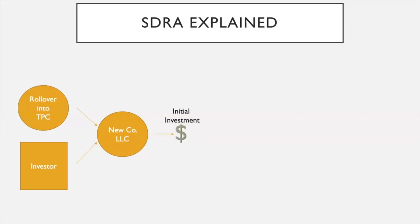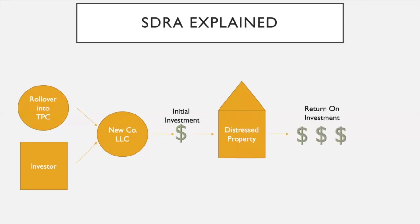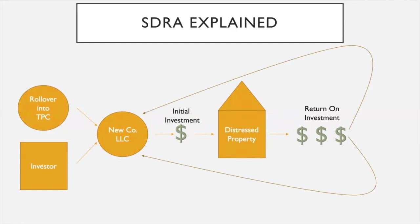You take an initial investment from the self-directed retirement account and invest it in a distressed property. You fix and rehab the property, then sell it making a return on investment. That return goes back to the company and the profits are split per the operating agreement. In a 50-50 split scenario, 50% of the return goes back to the self-directed retirement account tax-free, and the other 50% goes to the investor as their share of the profit.